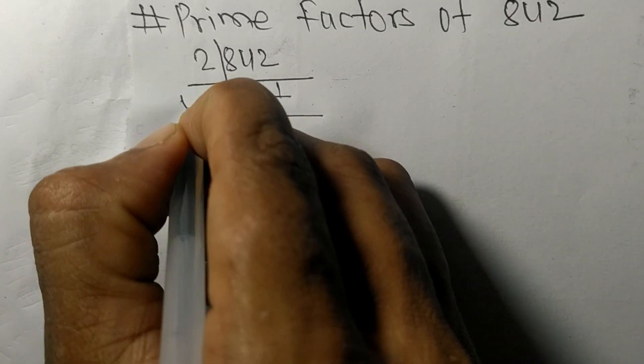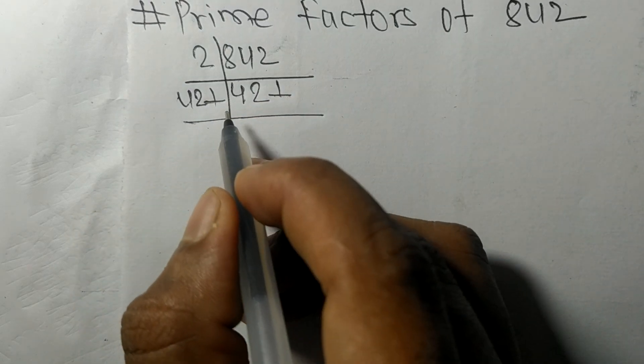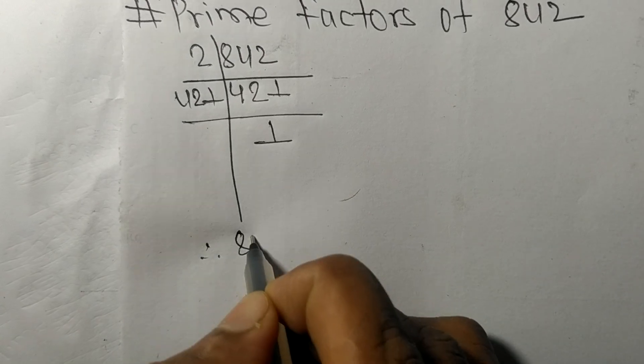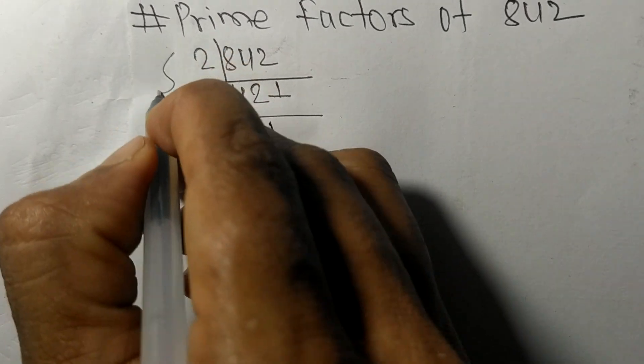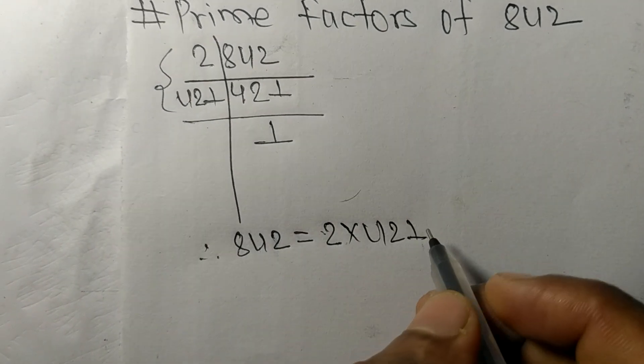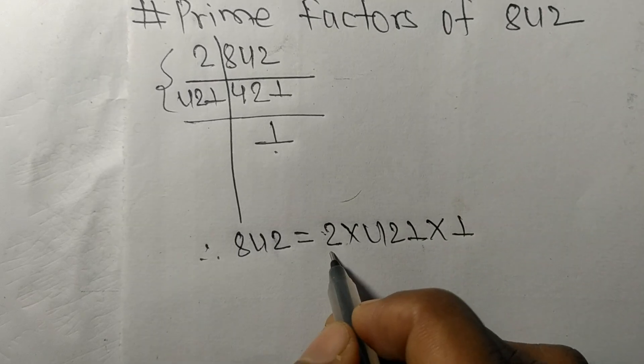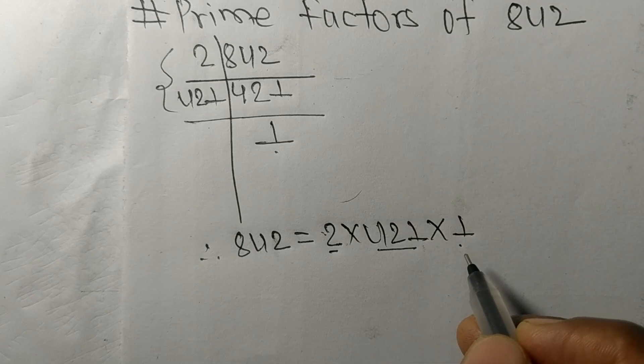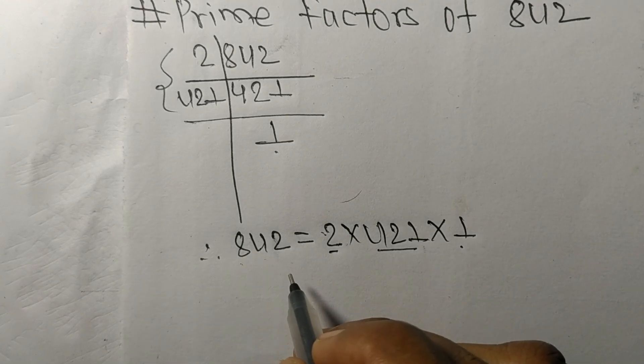It is exactly divisible by 421 only, and on dividing we get 1. Therefore, 842 is equal to, from this side it is 2 times 421. From here it is 1. So 2, 421, and 1 are the prime factors of 842.